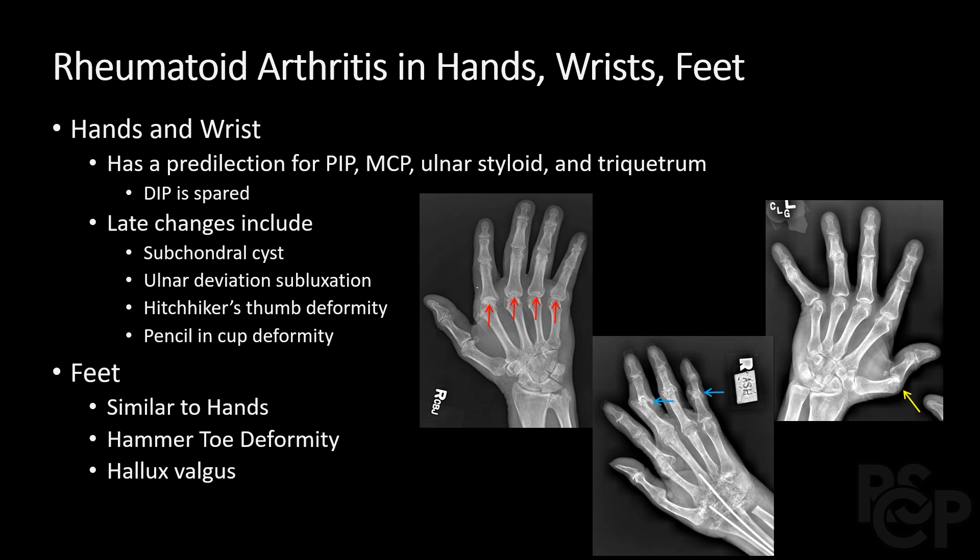Some late changes include subchondral cysts and ulnar deviation subluxation, which we can see here with the red arrows — that's ulnar deviation of the second to fifth MCP joints. We also have the hitchhiker's thumb deformity, seen with the yellow arrow, and the blue arrows represent the pencil and cup deformities involving the third and fifth PIP joints.